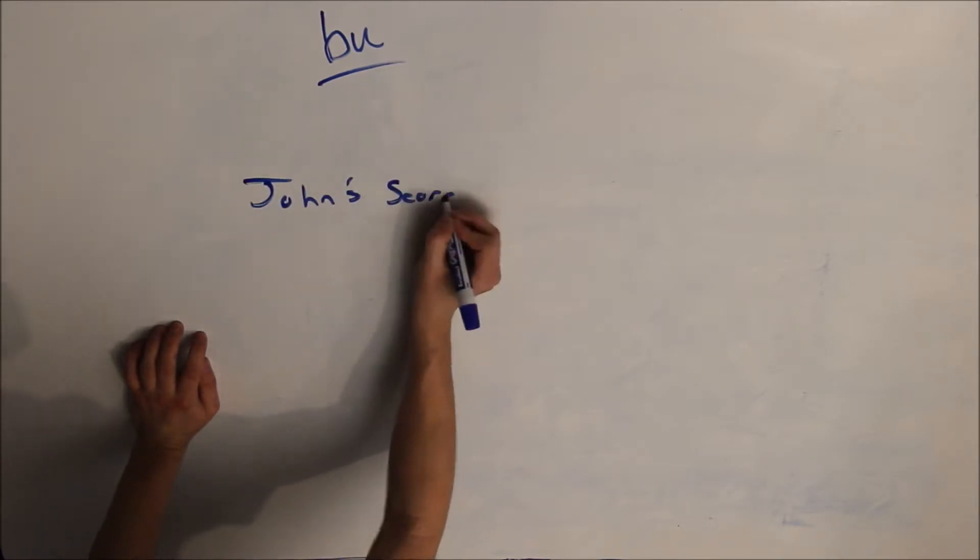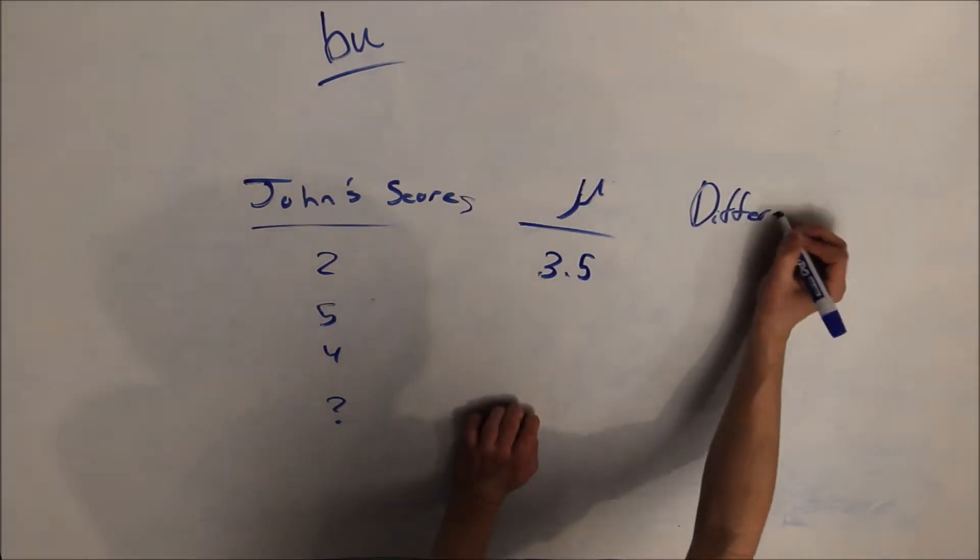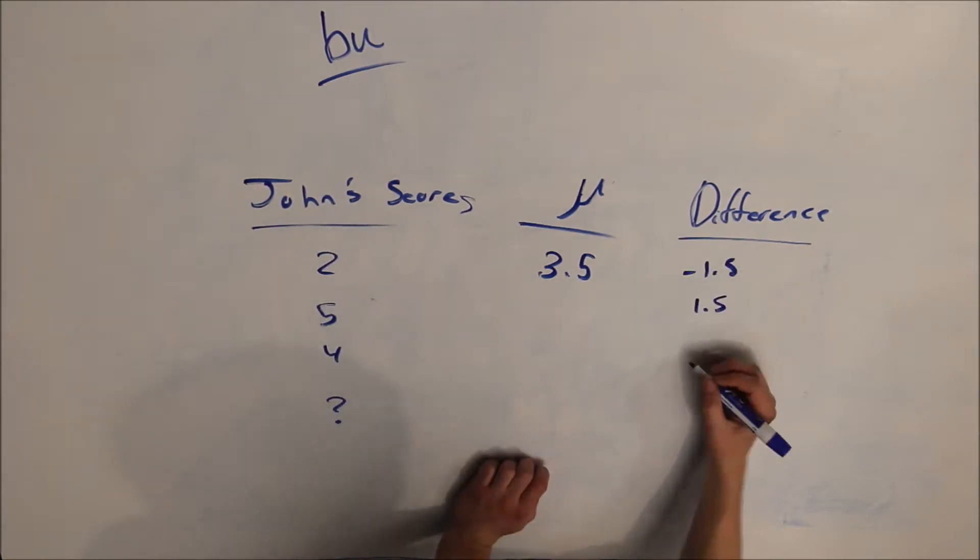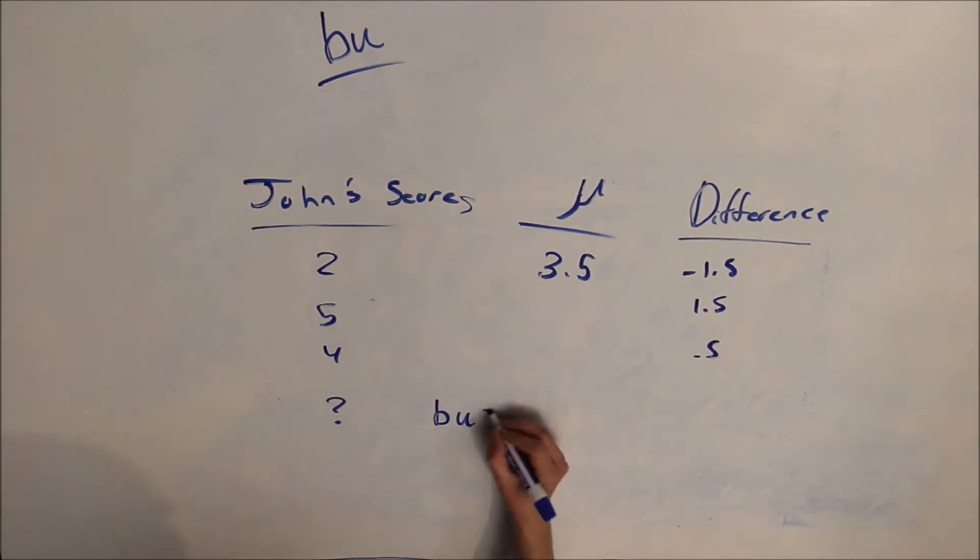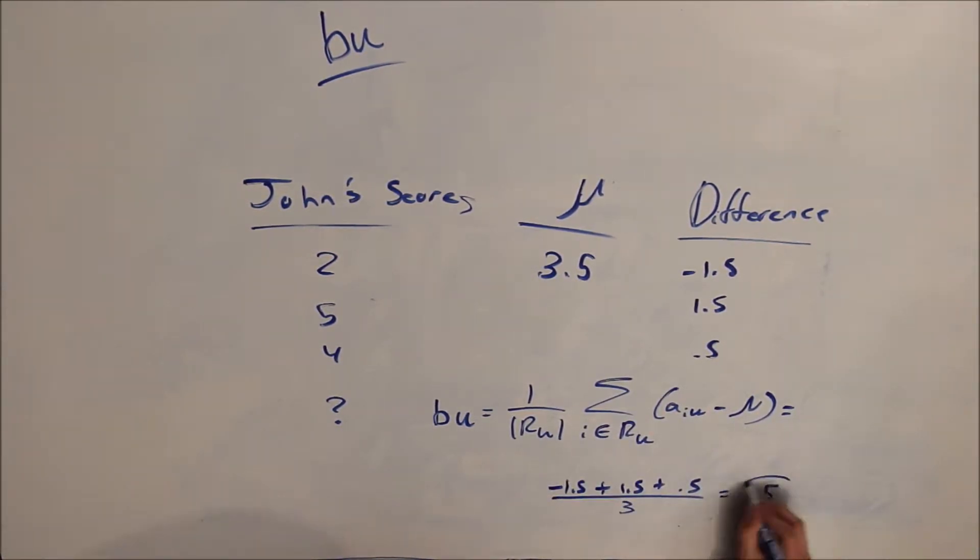Next, let's solve for BU. Let's bring up John's scores again and let's compare it to the mu 3.5. You can see the differences here are negative 1.5, 1.5, and 0.5 from the difference. Therefore, in order to solve for the BUI, you sum the differences and divide by the number, which in this case gives us the value of 0.5.